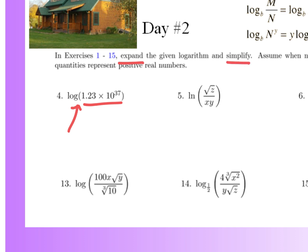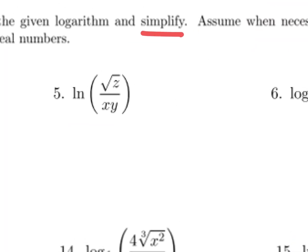Anytime you see ln, write it as log base e. Does that instantly give you the answer? No, but one more thing: anytime you have a square root, write it as to the power of one-half. That makes you realize there's a power on the argument, so you can put it down in front later when the expression is written all the way out.